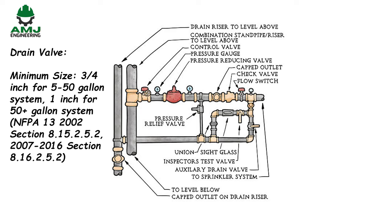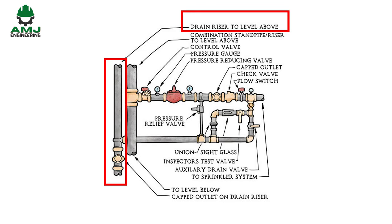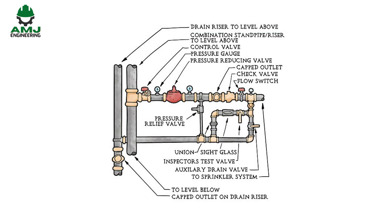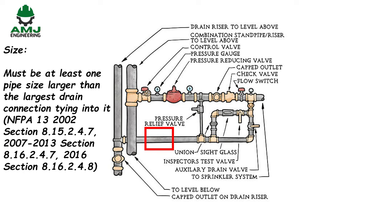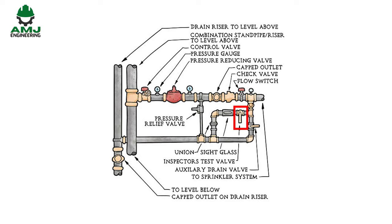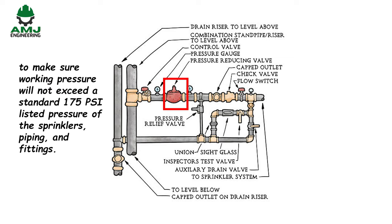Drain valve minimum size: three-quarter inch for five to 50 gallon systems, one inch for above 50 gallon systems. Drain riser discharge must be to outside or to a drain capable of handling the flow, and must be at least one pipe size larger than the largest drain connection tying into it. Inspector's test must be accessible and discharge outside or to a drain capable of handling flow, and must be downstream of the water flow alarm. A pressure gauge is required at each floor control valve.